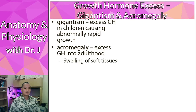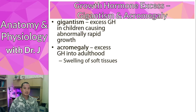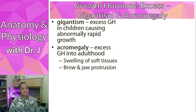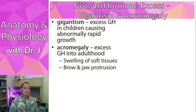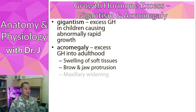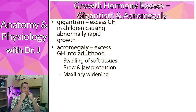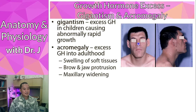In acromegaly you see swelling of soft tissues, since growth hormone stimulates cell division and replication — soft tissues and connective tissues are targeted. Bone is a connective tissue, and even though it's dense, growth hormone does stimulate bone growth. You also see changes in skeletal tissue, including maxillary widening — the maxilla forms the majority of your upper jaw. Notice this example: the individual has prominent brows, a very elongated jaw that protrudes, and a prominent maxilla.